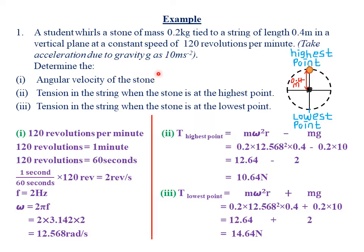Angular velocity can be given by a variety of formulas: 2πf, or 2π over the period T. Because we are given 120 revolutions per minute, we can use this to find the frequency. If 120 revolutions are made per minute, that means 120 revolutions are made in 60 seconds. Frequency is the number of revolutions made per second.